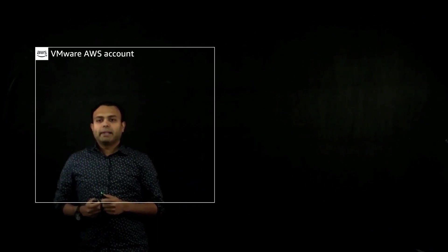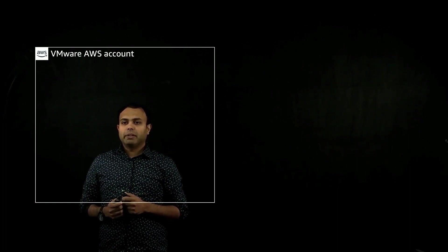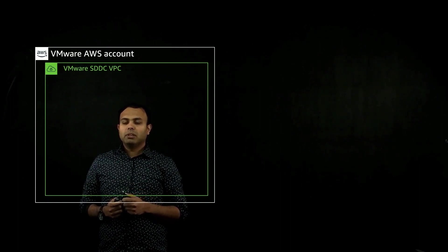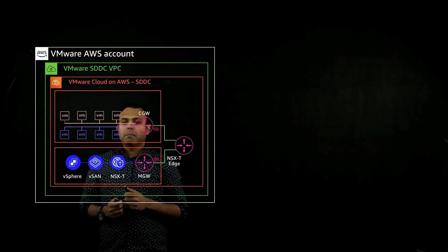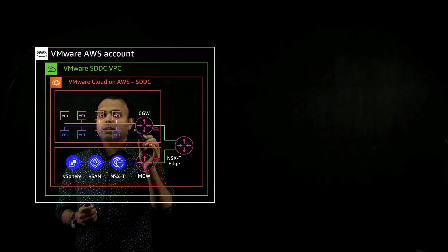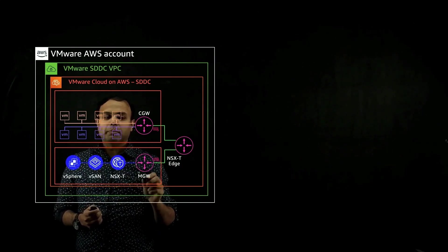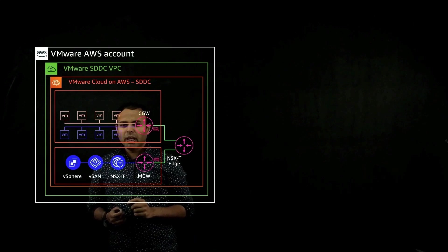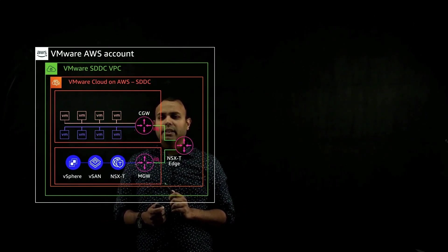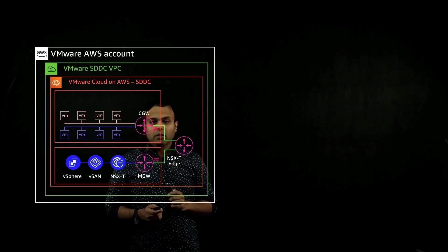Let's begin by taking a look at the account structure. What you see here is a VMware AWS account, which is also referred to as a shadow account. This is completely owned and managed by VMware. In this account, you have something called a VPC, also designated as a shadow VPC, which acts as a network underlay. In this VPC, you have the VMware Cloud on AWS SDDC that is deployed, which includes one or more compute segments that sit behind the compute gateway and one management segment that runs the management workloads behind the management gateway called the MGW. And then you have a T0 router, which is also called the NSX-T, that facilitates all of the north-south traffic that leaves and enters the SDDC.